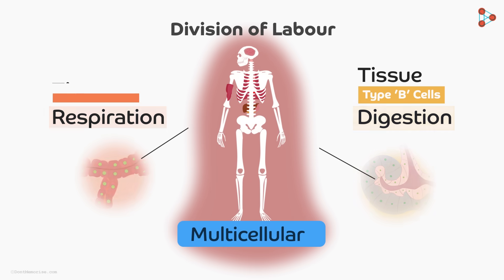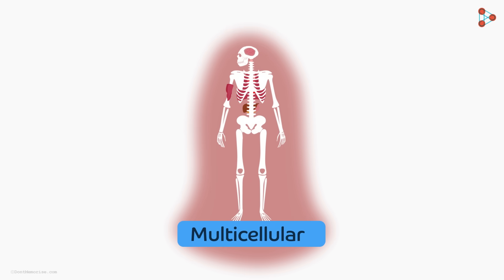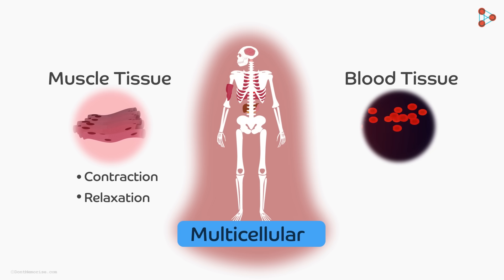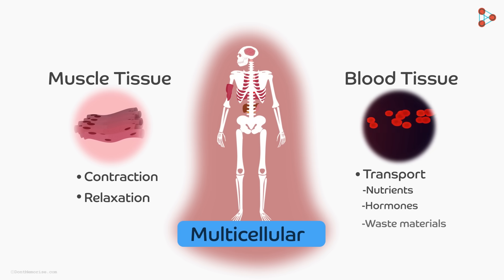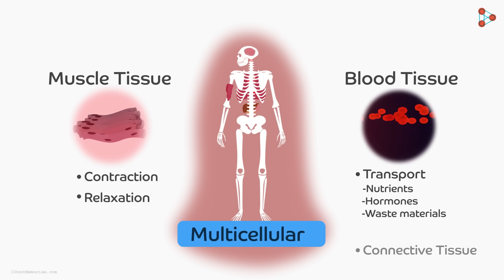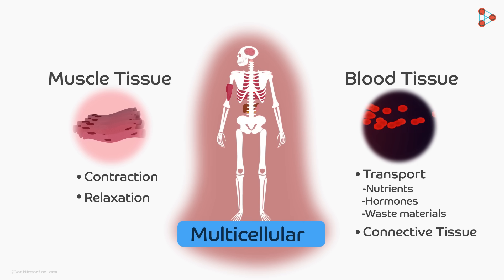Multicellular organisms have tissues in their bodies placed at specific places to carry out specific functions. This is called division of labour in the organism's body. For example, muscles are tissues that help movement by contraction and relaxation. Blood is also a tissue — it helps transport nutrients, hormones, and waste materials. Blood is a connective tissue of the human body.